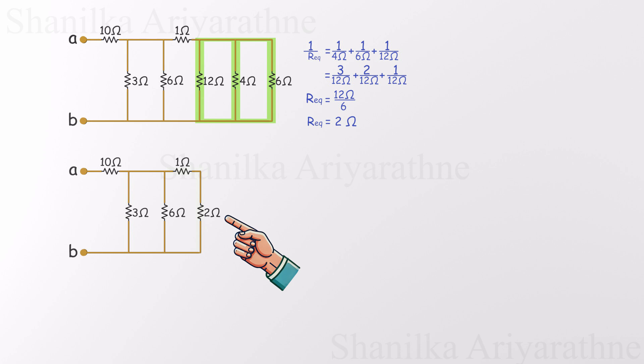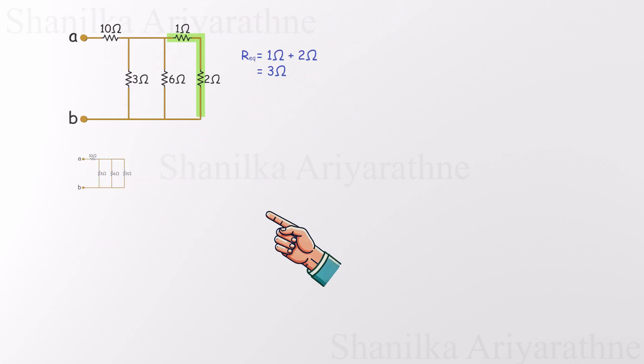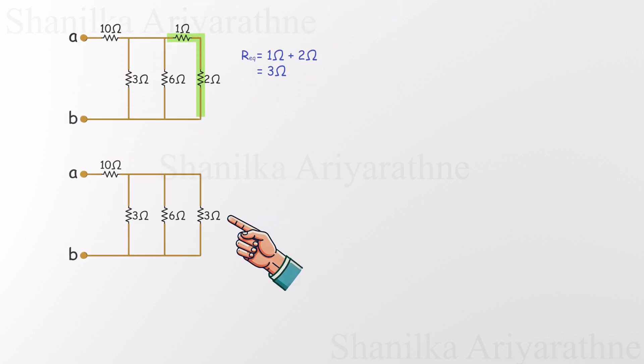Now we're back to a nice straightforward case. Two resistors in series. One ohm and two ohms. No tricks here, just a simple addition. Combine them and you get three ohms. So we swap out those two resistors for a single three ohm one. With that done, it's time to redraw the circuit again. It's really starting to slim down and take a much more manageable form.